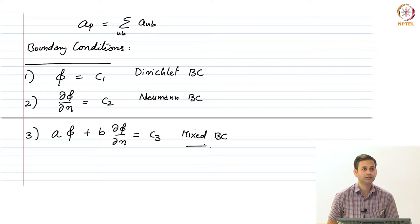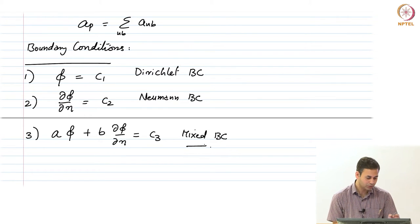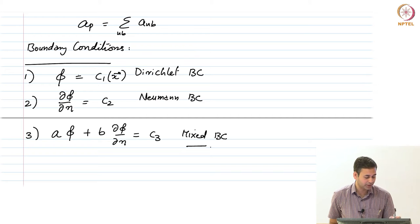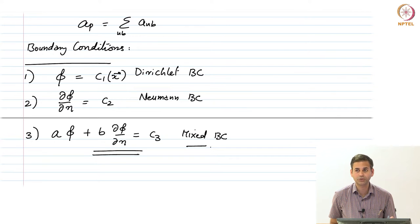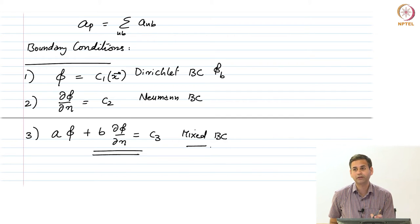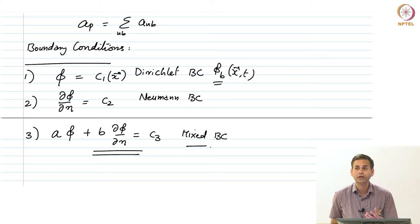Let us take a look at each of these boundary conditions and how they change our discretization in today's lecture. C1 can be a function of space or temperature and things like that. Essentially, what we call it is phi equals phi on the boundary will be specified. How phi_B varies with space or with time would be specified by the user.